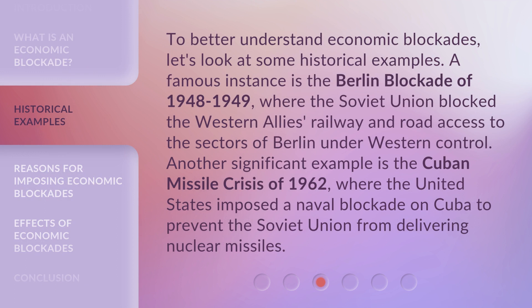To better understand economic blockades, let's look at some historical examples. A famous instance is the Berlin Blockade of 1948–1949, where the Soviet Union blocked the Western Allies' railway and road access to the sectors of Berlin under Western control. Another significant example is the Cuban Missile Crisis of 1962, where the United States imposed a naval blockade on Cuba to prevent the Soviet Union from delivering nuclear missiles.